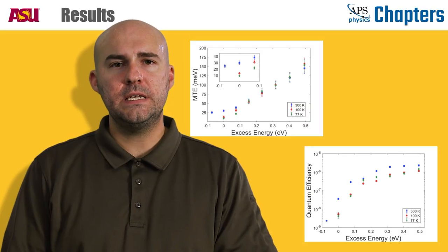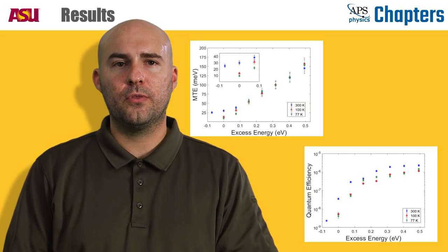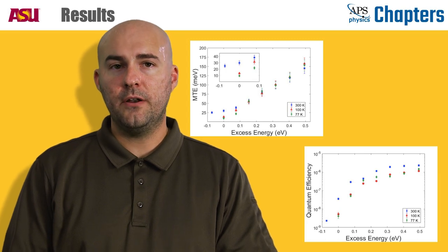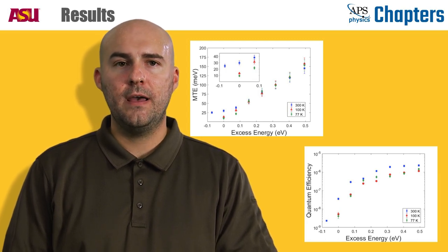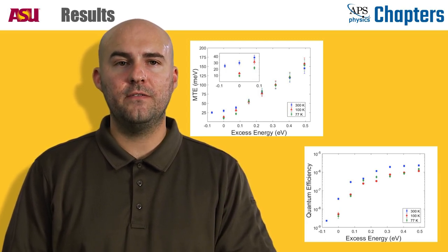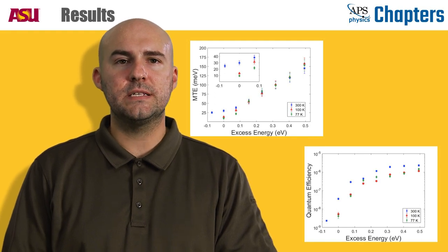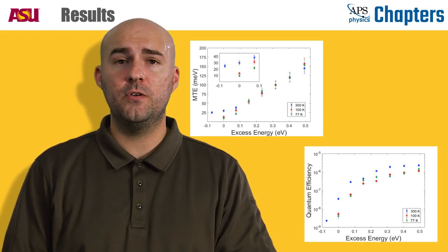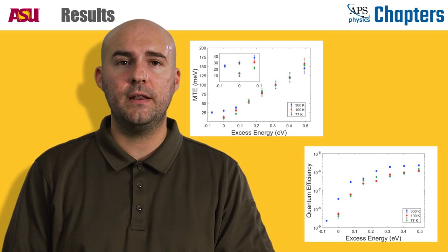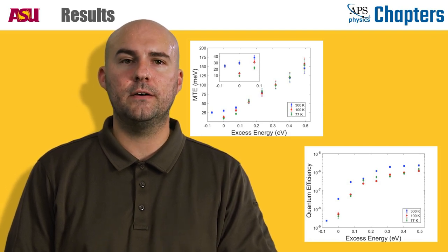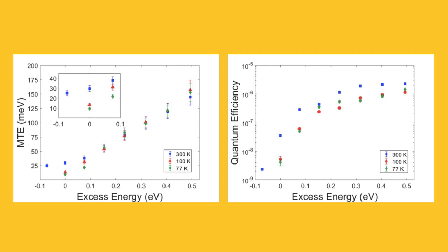Our measurements for MTE and quantum efficiency were collected for three different temperatures: 300 Kelvin, which is just room temperature, and then the cryogenic temperatures of 100 Kelvin and 77 Kelvin. We plotted our results as a function of the excess energy which, if you recall, is simply the difference between the photon energy and the work function of the photocathode.